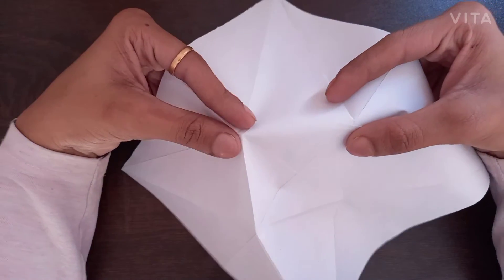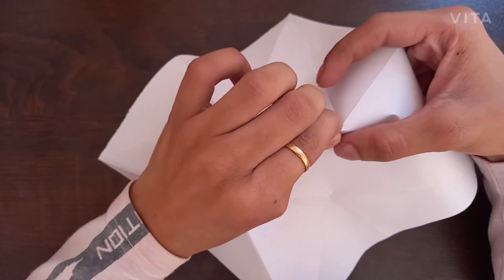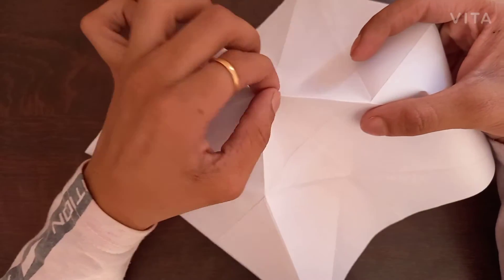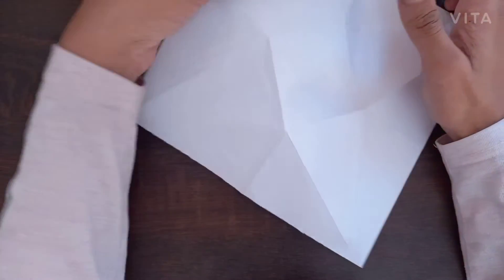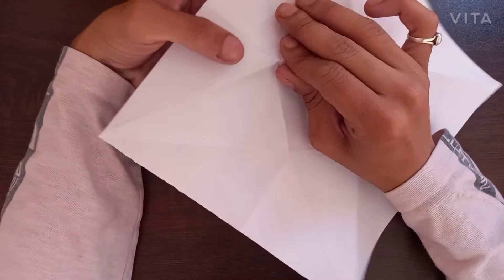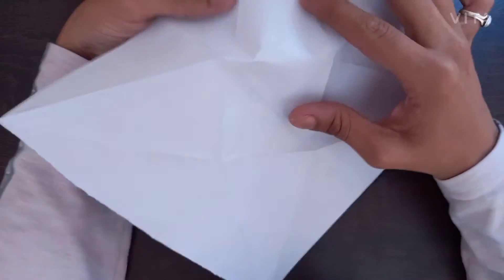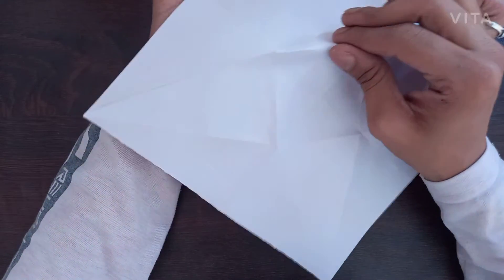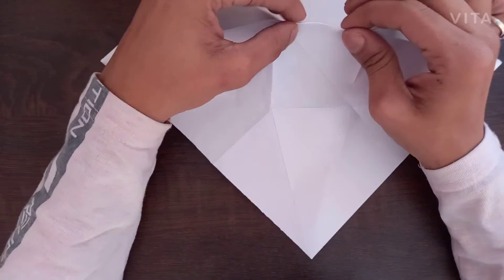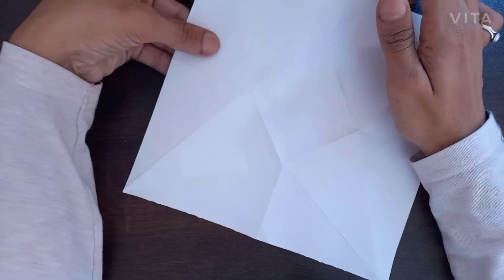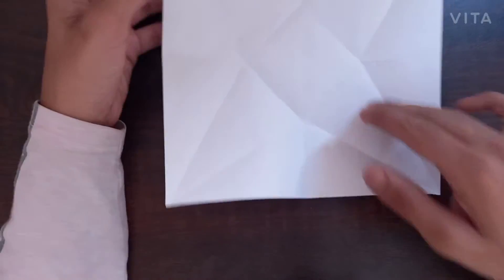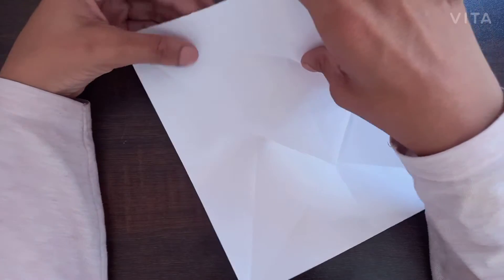Repeat the same step for the remaining sides. Just like this. Just make sure they are even as possible and making a square at the center.